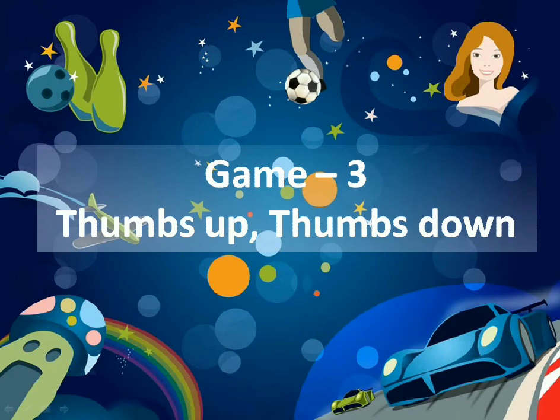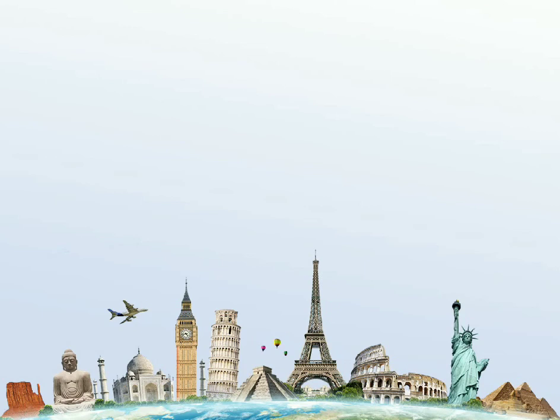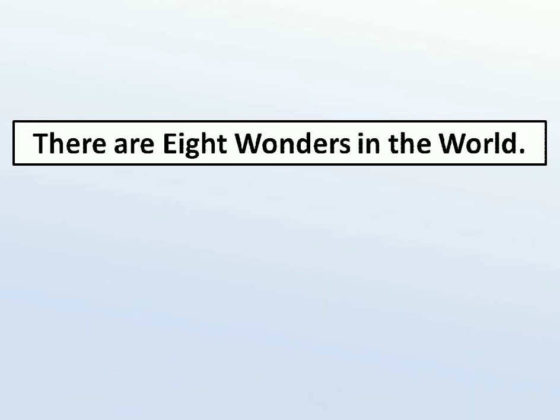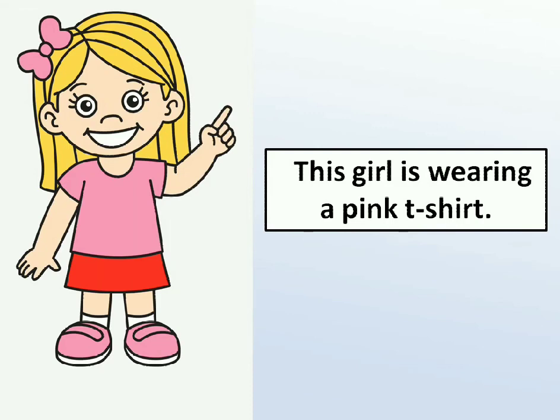Game number three is 'Thumbs Up Thumbs Down.' In this game, we put some statements in front of students, like 'There are eight wonders in the world.' If the statement is correct, students have to show thumbs up; if the statement is incorrect, they show thumbs down. Here, this statement is incorrect, so they will show thumbs down.